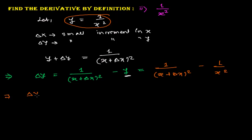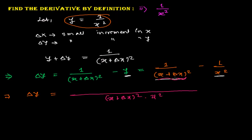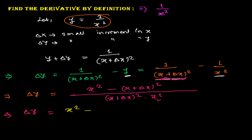So my equation is now delta y equals this expression. I need to take the LCM of these two terms. The LCM will be (x plus delta x) squared times x squared. When that quantity divides the whole expression, (x plus delta x) squared cancels with the first term, leaving x squared; and x squared cancels with the second term, leaving (x plus delta x) squared. So delta y equals x squared minus (x plus delta x) whole squared, all over (x plus delta x) squared times x squared.